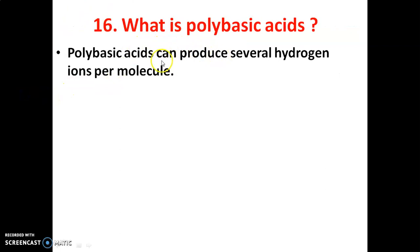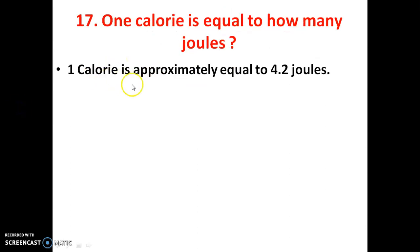Next: What are polybasic acids? Polybasic acids can produce several hydrogen ions per molecule — they contain more H⁺ ions during a reaction. Also, one calorie is approximately equal to 4.2 joules — this is an important value to remember.